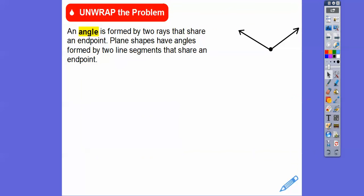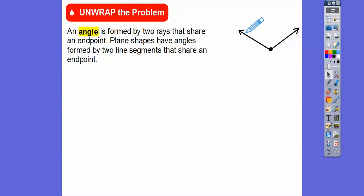So an angle — here's one over here to the right. This angle is formed by two rays. Remember, rays have a starting point; the books call them end points, and a ray goes forever in one direction. So there's an arrow right there, and here's another ray with the arrow going in that direction.